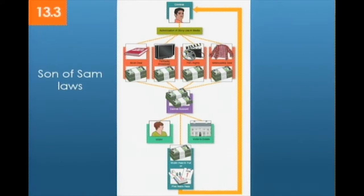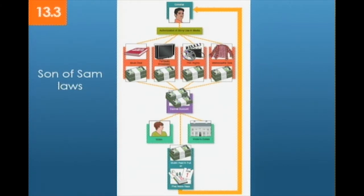There is something called the Son of Sam laws. During the 1970s, there was a serial killer named David Berkowitz in New York City who would walk up to people and randomly shoot them. He was known as the Son of Sam — notes passed by him discussed 'Sam,' who was talking to him and telling him to shoot people. Sam was his dog. David Berkowitz was what we might say was legally insane. In order to keep the perpetrator from cashing in on their story, the Son of Sam laws were passed almost universally in the United States.